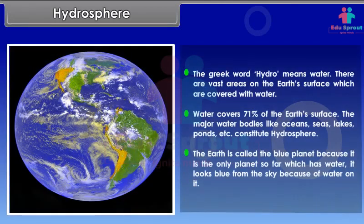The Greek word 'hydro' means water. There are vast areas on the Earth's surface covered with water. Water covers 71% of the Earth's surface. Major water bodies like oceans, seas, lakes, ponds, etc. constitute the hydrosphere. The Earth is called the blue planet because it is the only planet with water, and it looks blue from the sky because of the water on it.